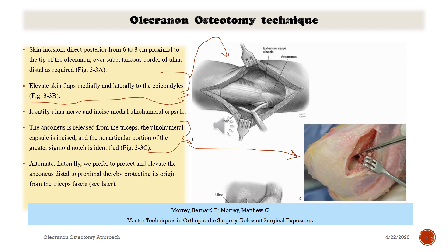Alternatively, laterally we prefer to protect and elevate the anconeus incision from distal to proximal, thereby protecting its origin from the triceps fascia.